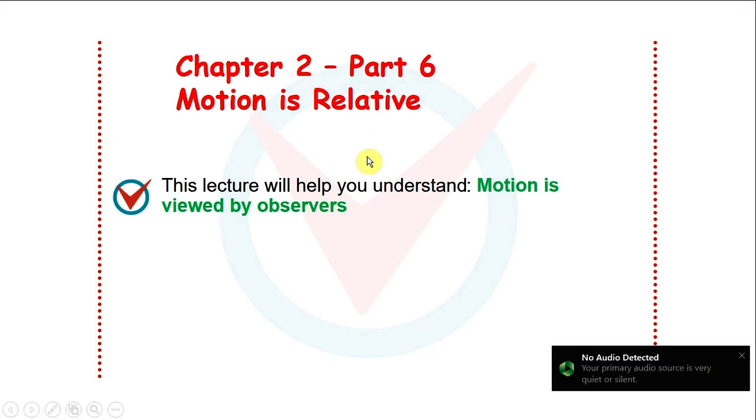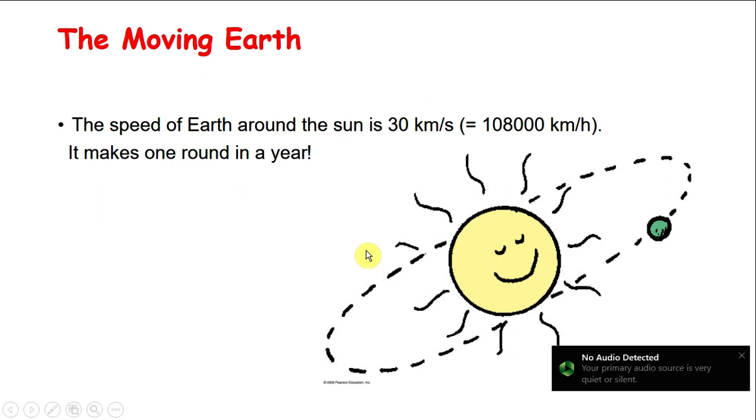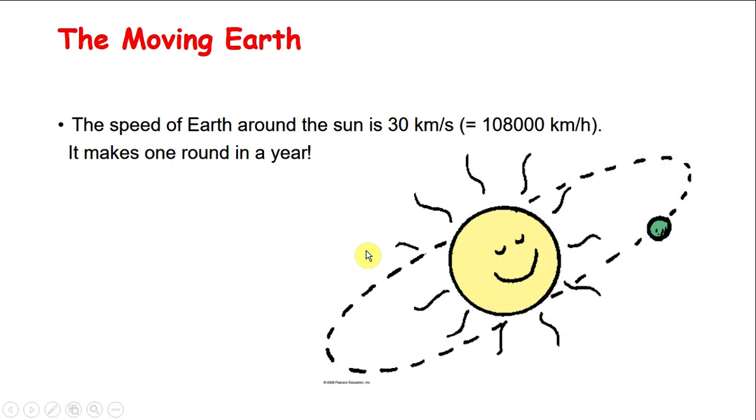Chapter 2, Part 6: Motion is relative. Now we know that Earth is moving around the sun. The speed of Earth around the sun is about 30 km per second, and it makes one round in a year.